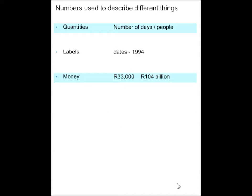Numbers are used to describe different things. Labels, for example, quantities. The number of days in our cycle is 7. The number of people who are going on camp is maybe 200. Labels are used, we use dates for example in labels, 1994, or you get expiry dates on tinned food or preserved food. Money, for example, a man earned 33,000 for a particular job, or the government is spending 104 billion on education this year.